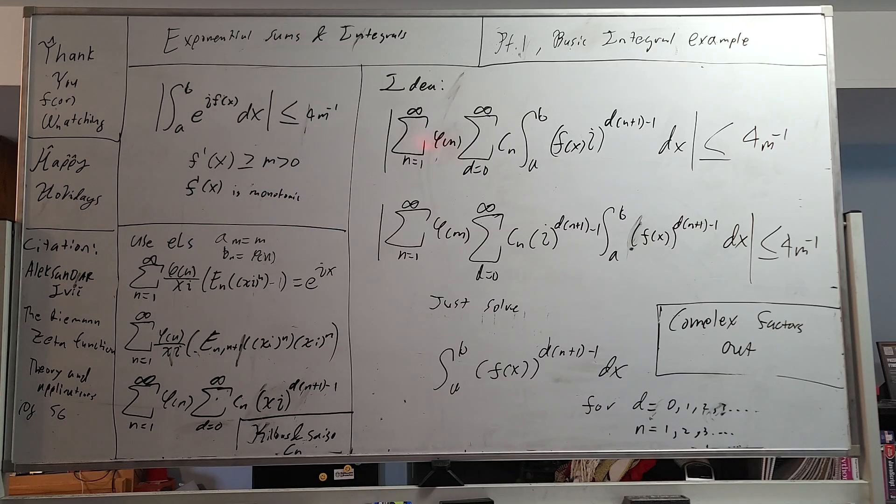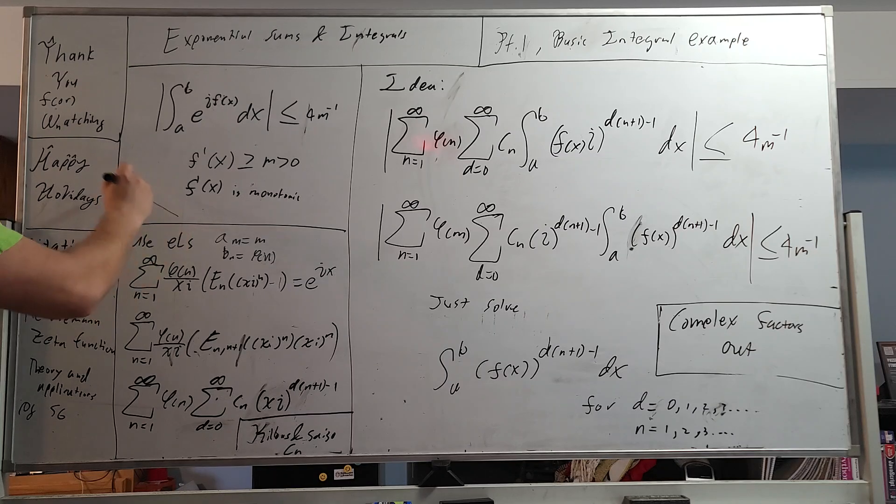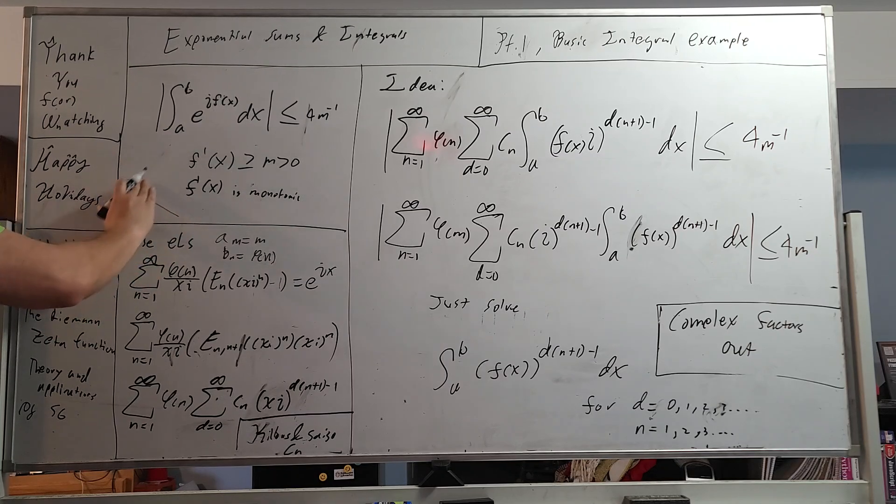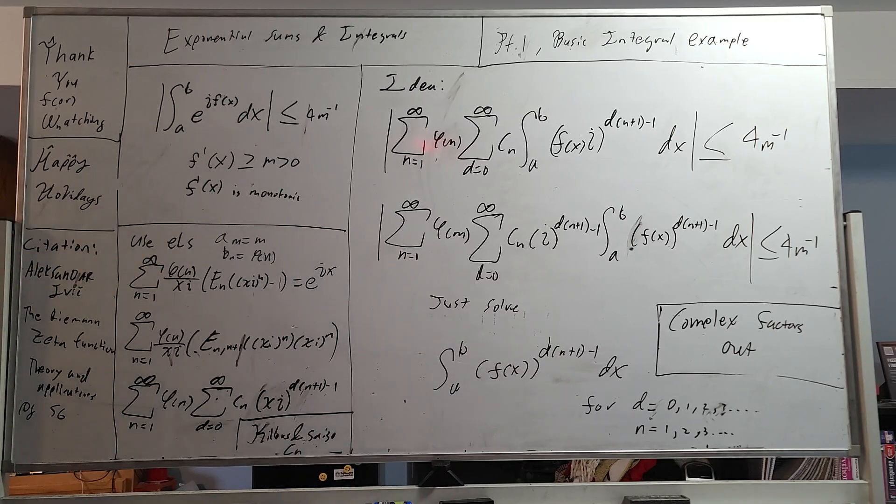Now, what does that mean, monotonic? It's a special property where it's always continuously increasing or always continuously decreasing. So this would be monotonically decreasing, and this would be monotonically increasing. And many times, these types of monotonic functions are of great interest.